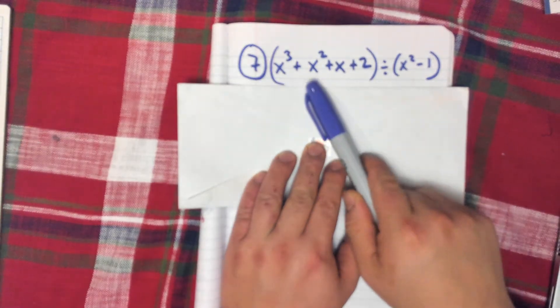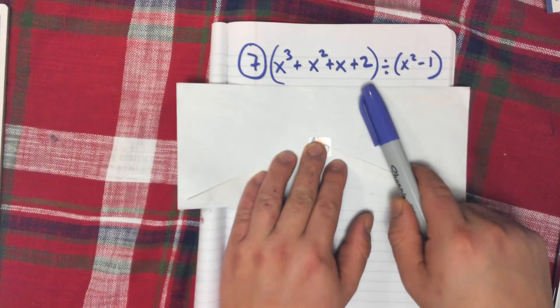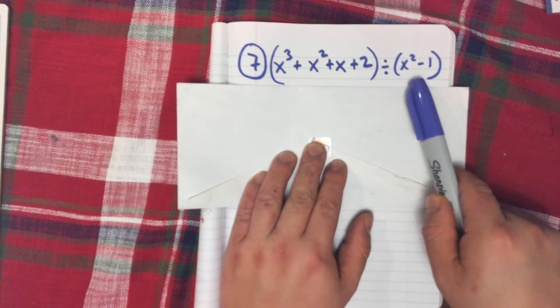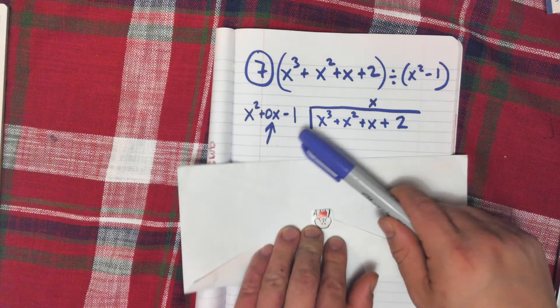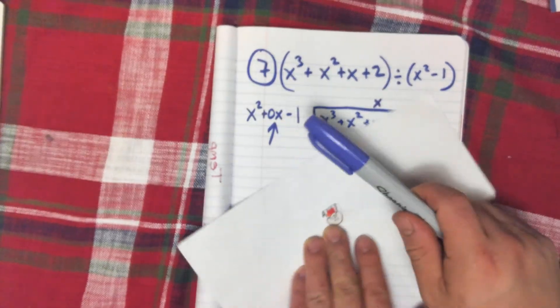We have x cubed plus x squared plus x plus 2 divided by x squared minus 1. Now we're going to write this out, but when you write it out, notice that I'm adding this extra term here.